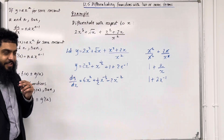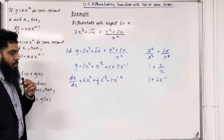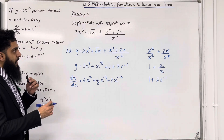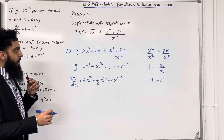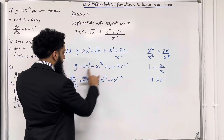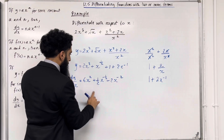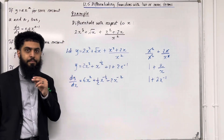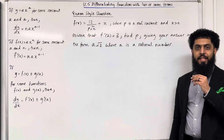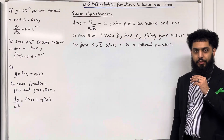So that there is our dy/dx — we have differentiated with respect to x that expression: 6x² + ½x^(−½) − 2x⁻². Here is the answer. Moving on to an exam-style question.